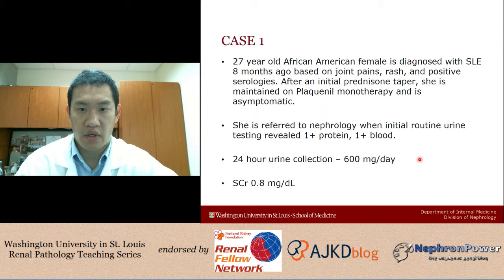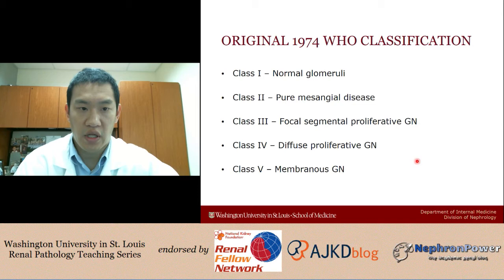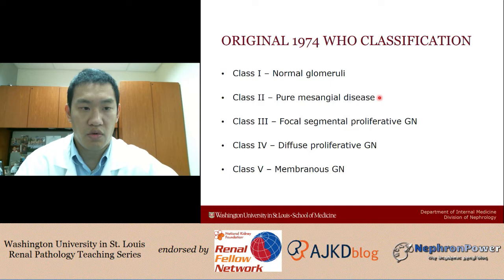So we're going to discuss a little bit about the classifications that have evolved over the years. In the 70s, the WHO classification was the original — this is what I was taught when I was a medical student. So you have class 1, which is normal; class 2, which is pure mesangial disease; class 3 is a focal segmental proliferative glomerulonephritis; class 4 was your diffuse proliferative glomerulonephritis; and class 5 was membranous.